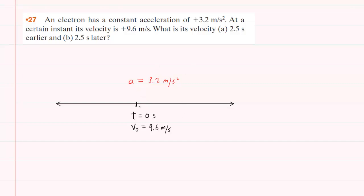We've gone ahead and drawn a number line to represent the situation depicted in the question. At the center of our number line, we have labeled a time equal to zero seconds. This will serve as our reference time. It will be the time that the given information is based upon, and that given information includes the acceleration and what we will call the initial velocity of 9.6 meters per second.